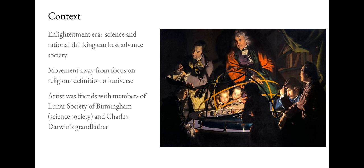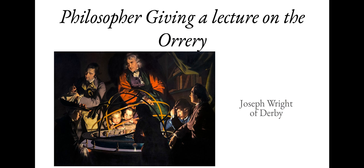For function, some call this a portrait, while others call it a genre scene — a scene of everyday life — both of which fit. For formal qualities, value is key: the tenebrism creates extreme contrasting values to generate drama. Emphasis is another formal quality — the light emphasizes the orrery and science, and highlights the joy, excitement, and importance of scientific discovery. This painting is set in the middle of the 18th century in Europe and points toward the advancements that will follow.